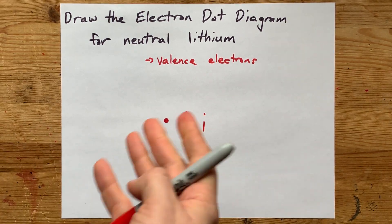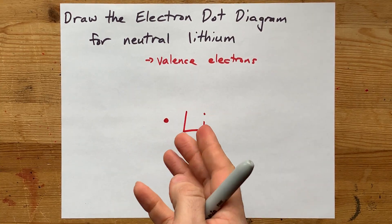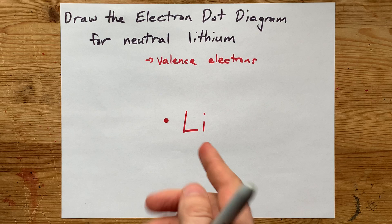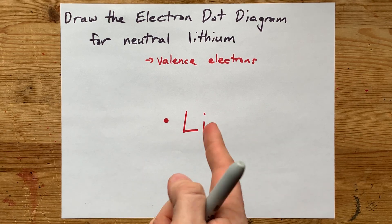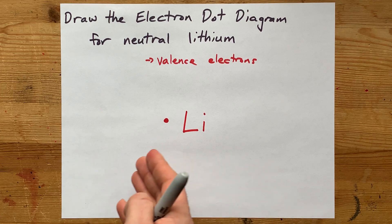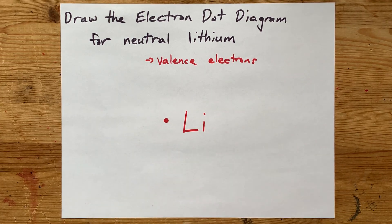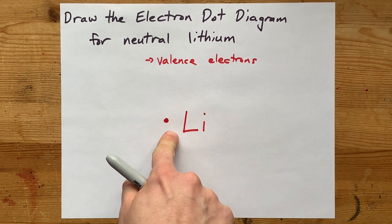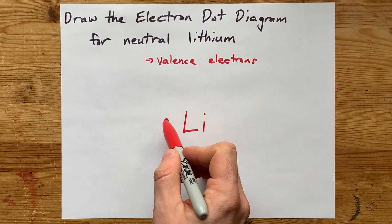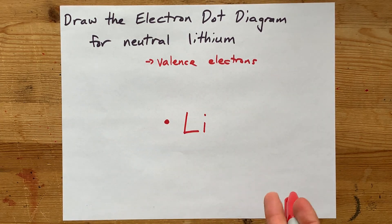Real chemists don't draw this diagram. It's here as a learning tool to help show how many valence electrons there are and maybe what will happen to those electrons if this reacts with something else. If you find my videos about Lewis structures for lithium oxide, you'll see that this metal gives its electrons away to a non-metal, and so you'll actually get to see this dot with an arrow moving to somewhere else.